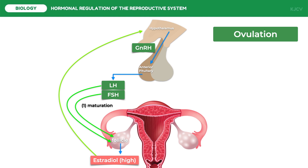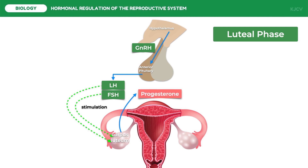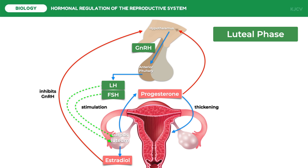Due to the development of the antral space in the follicle, the surge in LH triggers follicle enlargement, building strain within the follicle until it ruptures during ovulation, releasing the egg. LH and FSH drop after ovulation. The remains of the ruptured follicle become the corpus luteum, which secretes progesterone needed for preparation of the endometrium, as well as estradiol. The rise in progesterone and estrogen induces negative feedback that reduces GnRH secretion in the hypothalamus, decreasing the production of LH and FSH. Estradiol also contributes to the thickening of the endometrium.